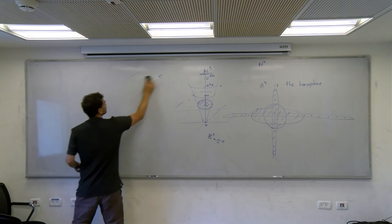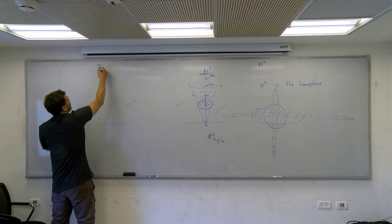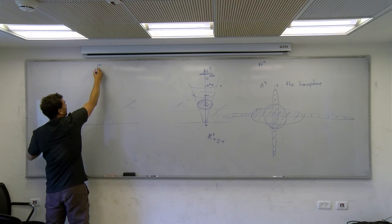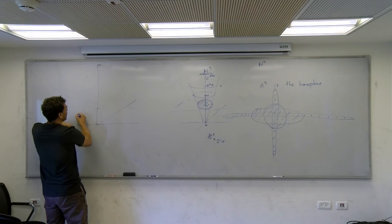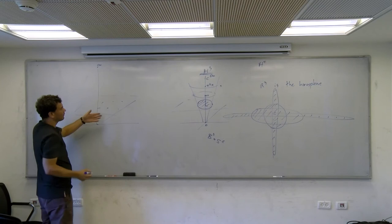Let's discuss the parabolic case in the last few minutes, staying in dimension three. In the upper half-space model the parabolic case has a fixed point at infinity. The geodesic is not preserved, but the parabolic element acts on the two-dimensional horosphere.